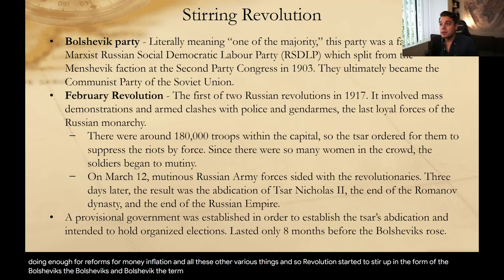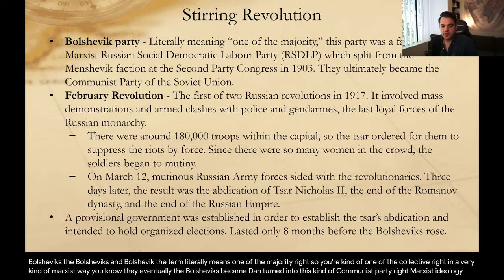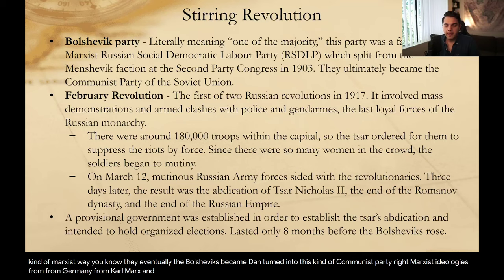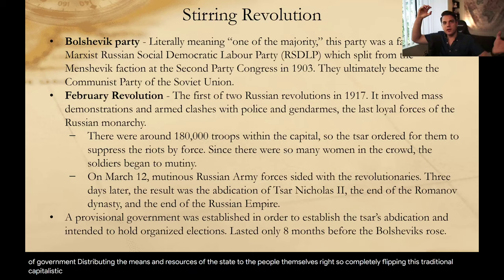Even though Tsar Nicholas II tried to uplift morale, he was not doing enough for reforms, for money, inflation, and all these other various things. Revolution started to stir up in the form of the Bolsheviks. The Bolsheviks — in Bolshevik, the term literally means one of the majority. You're one of the collective, in a very Marxist way. They eventually became and turned into this kind of communistic party. They were reading a ton of Marxist ideologies from Germany, from Karl Marx, and proliferating these ideas of breaking down capitalism, of having more egalitarian solutions of government, distributing the means and resources of the state to the people themselves.